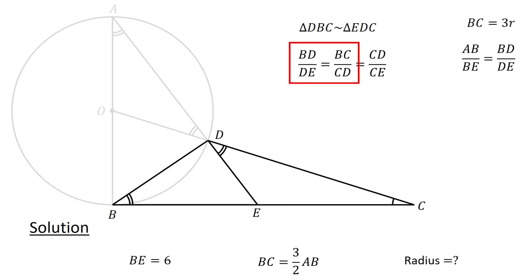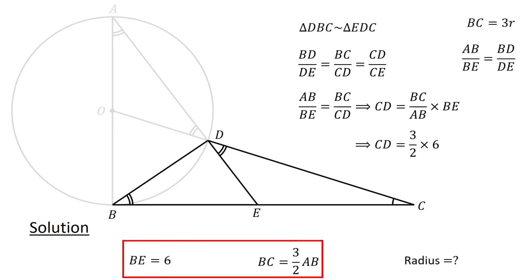From BD over DE equals BC over CD, and AB over BE equals BD over DE, we have AB over BE equals BC over CD, or CD equals BC over AB times BE. Since BE equals 6 units and BC equals 3 over 2 AB, we have CD equals 3 over 2 times 6, or 9 units.